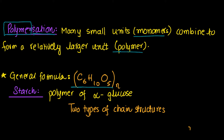The formula is C6H10O5 to the power n. You may wonder why there are two fewer hydrogens and one fewer oxygen compared to glucose. This is because, when forming polysaccharides, condensation reactions occur in which a water molecule is removed for each bond. So for n bonds, a water molecule is removed n times — that's why two fewer hydrogens and one fewer oxygen are present.